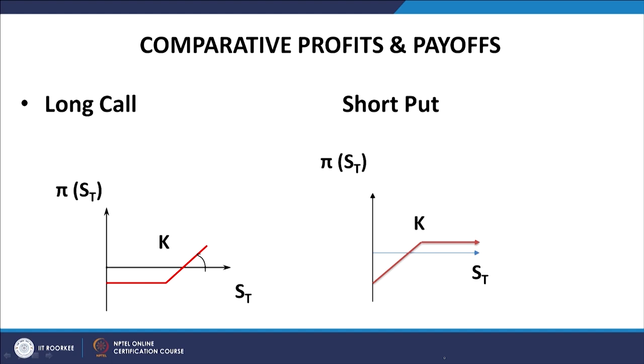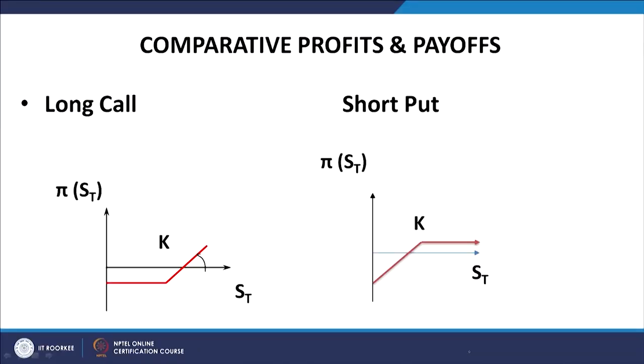If you compare these two strategies — the long call and the short put — you will find that both of them have a certain perception that the stock price is going to increase. In both cases the party is making a profit if the stock price increases. In the long call the profit is unbounded, but in the short put the profit is bounded and is confined to the amount of premium that the party has received on the short put.